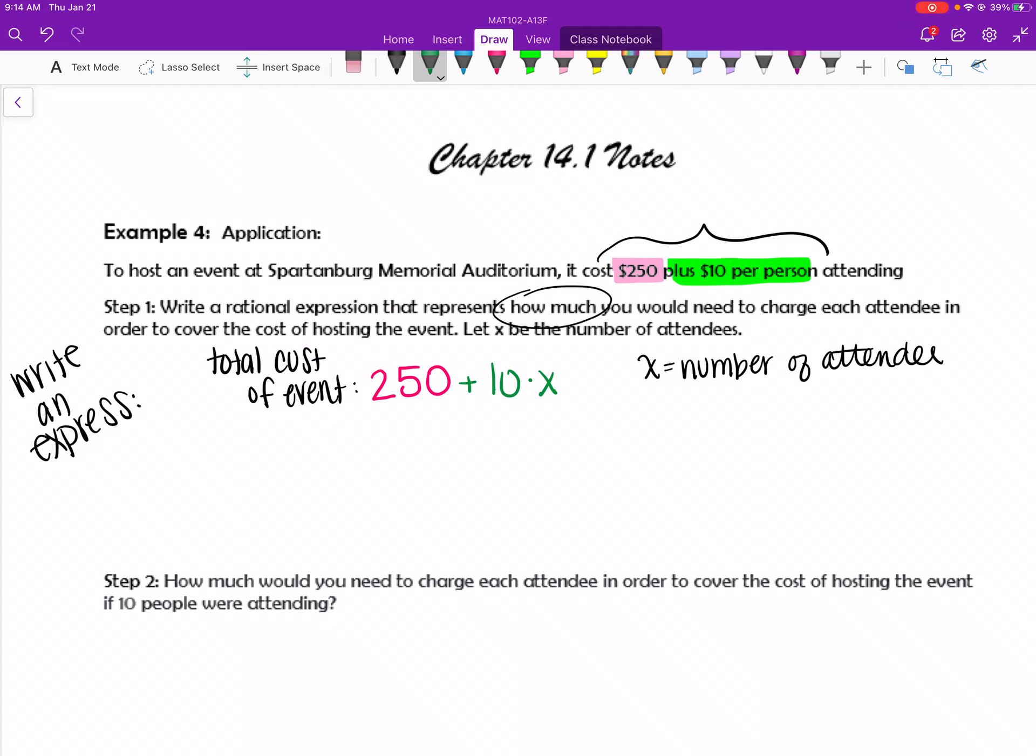But my question says, write a rational expression that represents how much you would need to charge each attendee in order to cover the cost. So I'm setting up, say, a fundraiser luncheon, and I don't want to pay the cost to rent the auditorium. I want to divide out that cost to each attendee. So the total cost is $250 plus 10x.